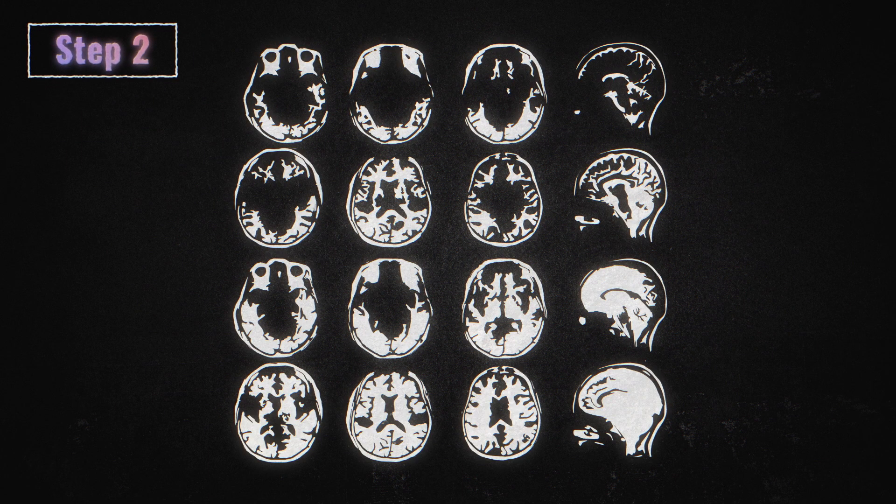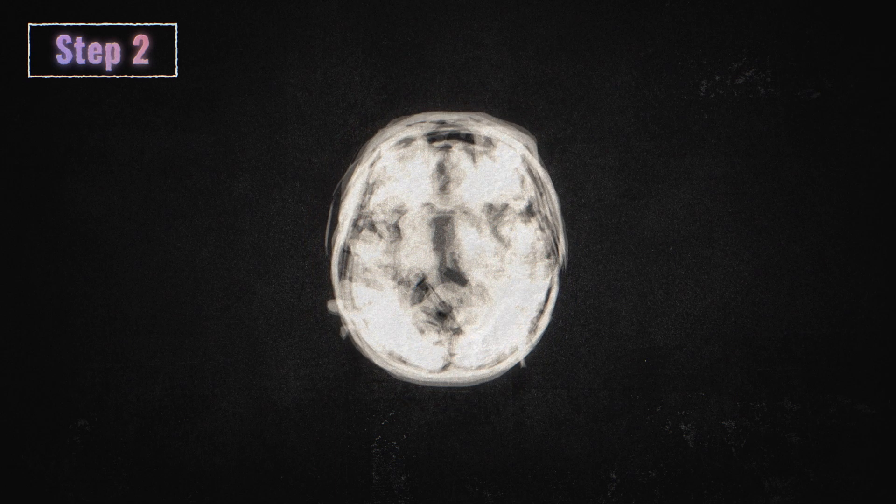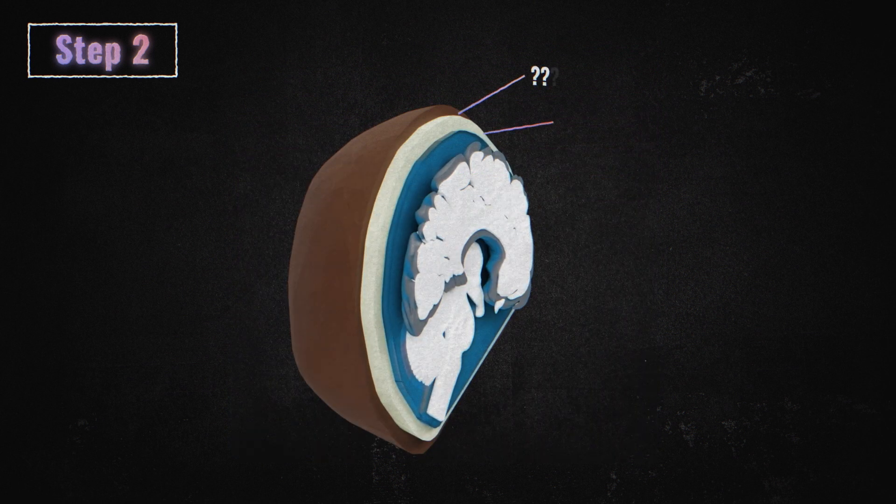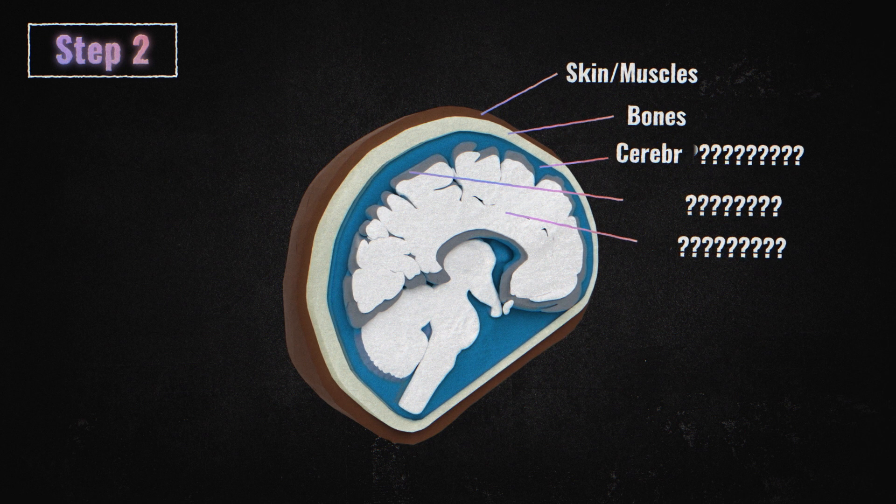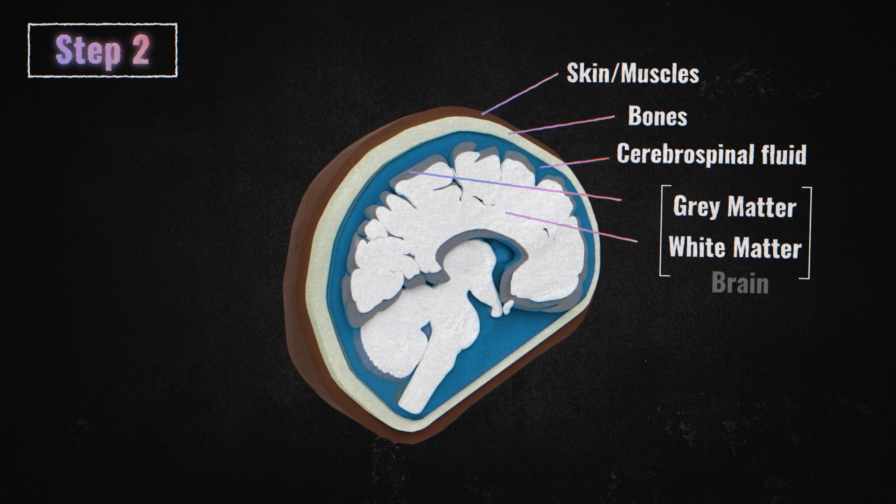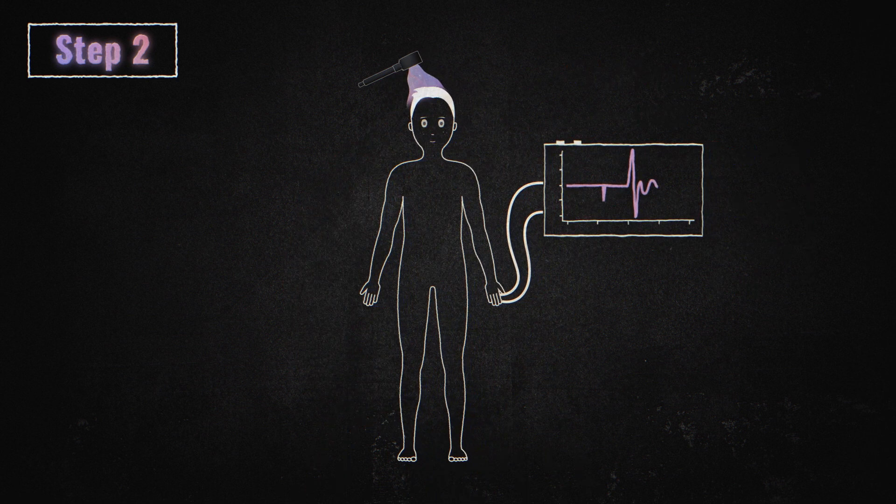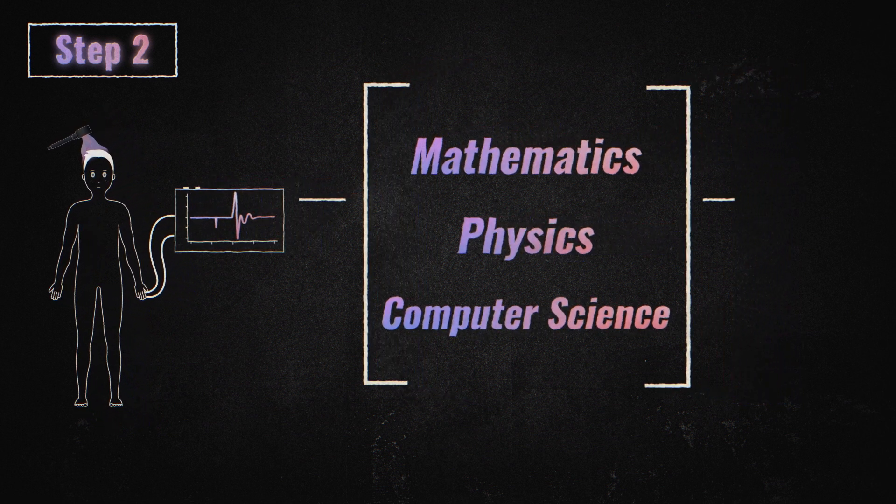Step 2. Subsequently, a high-resolution 3D model of Tim's head is created using the previously recorded MRI images. Specially developed algorithms are used to determine individual tissue types, such as skin, muscles, bones, and of course, the brain itself, from the gray values of the MRI image. Every single stimulation by the TMS coil can be calculated in computer simulations with a little mathematics, physics, and computer science.